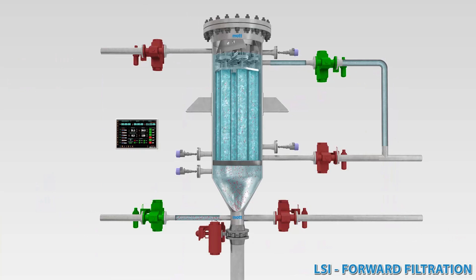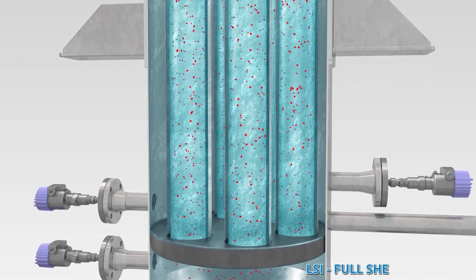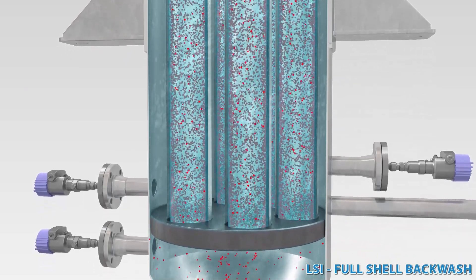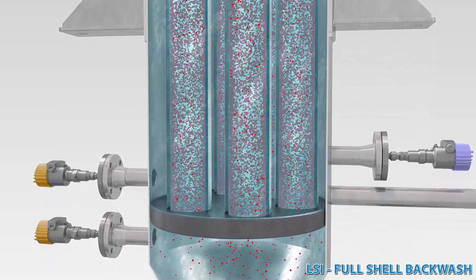Forward filtration continues until the differential pressure setpoint is reached, the cycle time setpoint is reached, or an operator interfaces with the control system to force a backwash.